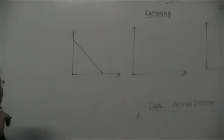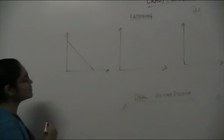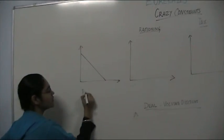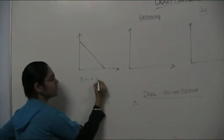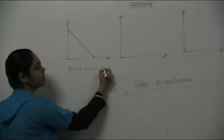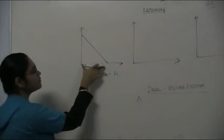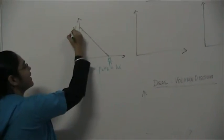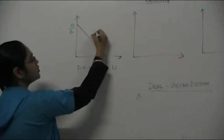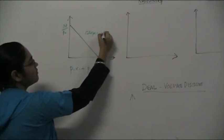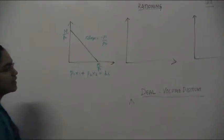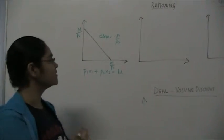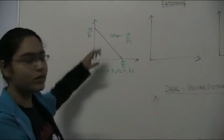Assuming that you know the basics about budget constraints, this is what a budget constraint looks like, with the equation p1*x1 + p2*x2 = m, where m is income. You must be familiar with the intercept m/p1, the intercept of the y-axis which is m/p2, and the slope which is minus p1/p2. Now using this concept, we will try to develop many other kinds of constraints which don't look like the normal constraint.